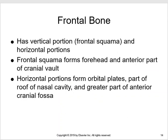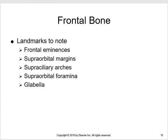The frontal bone has a vertical portion called the frontal squama and a horizontal portion right above the orbits. The frontal squama forms the forehead and the anterior portion of the cranial vault, and it also contains the frontal sinuses. The landmarks for the frontal bone include the frontal eminences, supraorbital margins, supraorbital arches, supraorbital foramina, and the glabella.